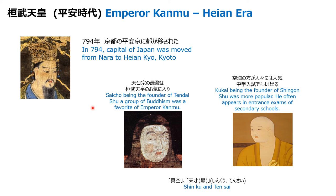Once he moved to Kyoto, he found many silent monks who just stayed in the mountains and did their training. Saichou was the founder of Tendaishu. There was also a very popular monk in Kyoto, Kuukai, who was the founder of Shingonshu. Kuukai is also featured in the entrance exams of secondary schools in Japan, so there are ways of remembering these people: Shingonshu and Kuukai, and Tendaishu and Saichou.